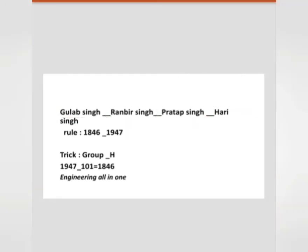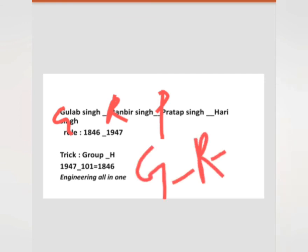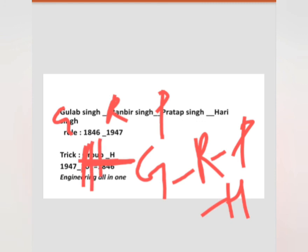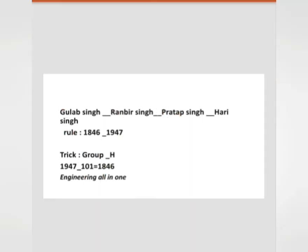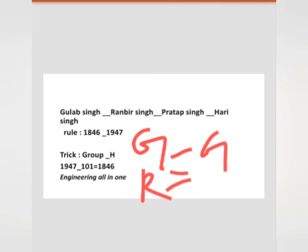Here is a trick to remember the sequence of rulers. In the word GROUP, G stands for Gulab Singh, R stands for Rambir Singh, P stands for Pratab Singh, and H stands for Hari Singh. So the sequence is G, R, P, H — GROUP H — to remember all four Dogra rulers in order.